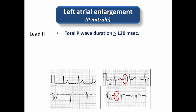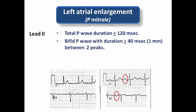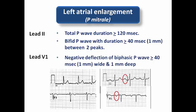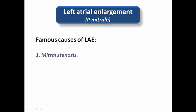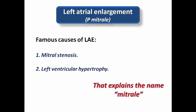To summarize the criteria for left atrial enlargement: in lead 2, total P wave duration is ≥120 ms (3 small squares), and there is a notched P wave with ≥40 ms (1 mm) between the two peaks. In V1, the negative deflection of the biphasic P wave is ≥40 ms in duration and ≥1 mm in depth. Famous causes include mitral stenosis — explaining the name P mitrale — and left ventricular hypertrophy or any cause of increased LV filling pressure.